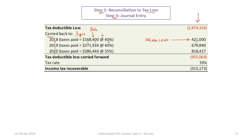In 2019, taxes paid were two hundred seventy-one thousand nine hundred and thirty-six at forty percent, implying taxable income of six hundred seventy-nine thousand eight hundred and forty. In 2020, taxes paid were two hundred eighty-six thousand four hundred and forty-six based on taxable income of eight hundred eighteen thousand four hundred and seventeen at thirty-five percent. Carrying back those three amounts leaves nine hundred fifty-five thousand and sixty-nine dollars as a loss carry forward, which times the future enacted tax rate gives a deferred tax asset of three hundred fifteen thousand one hundred and seventy-three.